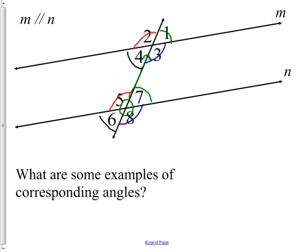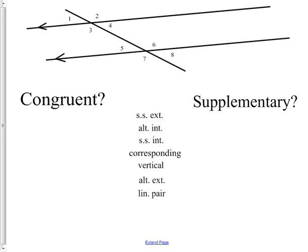Now let's fill in a chart — which angle relationships are congruent and which are supplementary? This is made obvious because one angle is clearly acute and the other is clearly obtuse. Same side exterior angles, like one and seven: one is acute and the other is obtuse — they're not the same. They add up to 180, so they're supplementary.